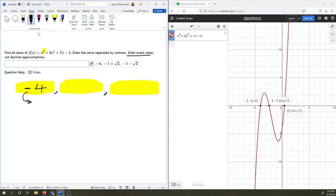So if x equals negative 4, x plus 4 must have been a factor. So we're going to take x plus 4 and we're going to do long division.